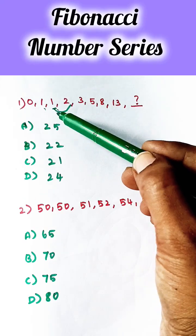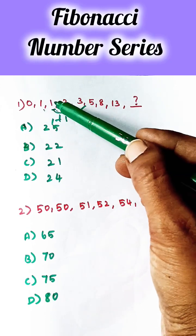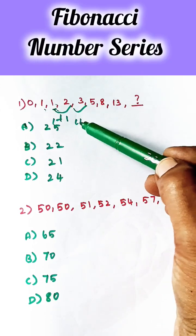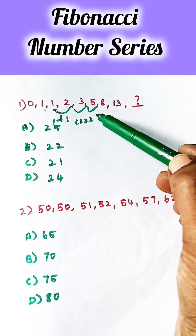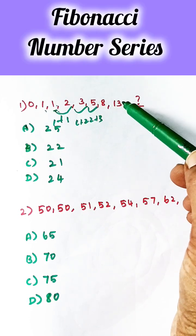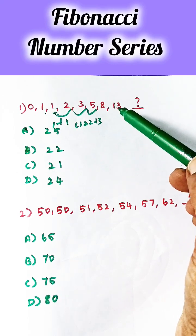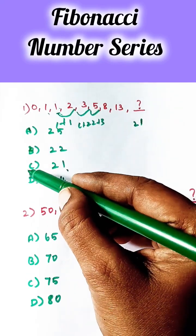So this number is calculated by 1 plus 1 equals 2. Then this one is 1 plus 2 equals 3. The next one is 2 plus 3 equals 5, then 3 plus 5 is 8, then 8 plus 5 is 13. So the next number is 13 plus 8, which is 21. So option C is correct.